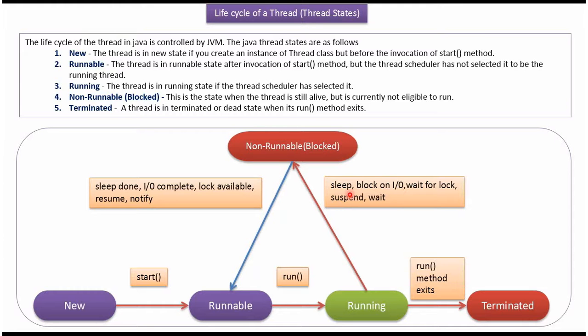Here you can see the reasons a running thread can become non-runnable: sleep, block on IO, wait for lock, suspend, and wait.